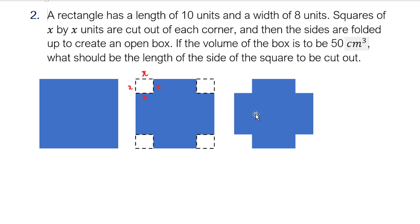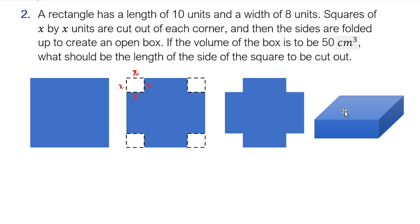So we will have this one. And then we will fold the flaps, or we will fold the sides to create a box. Something that looked like this one. And the volume now is 50 cm³. So what should be the length of the box to be cut out? Let's analyze. We have a rectangle of 10 units by 8 units. Say, for example, this is the 10 units, and this is the 8 units.